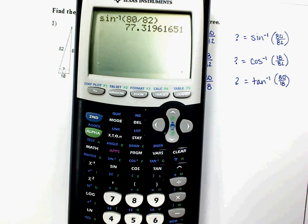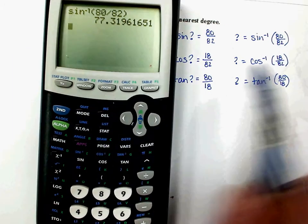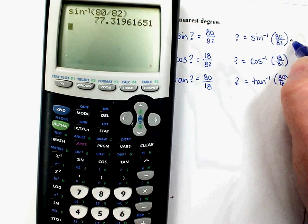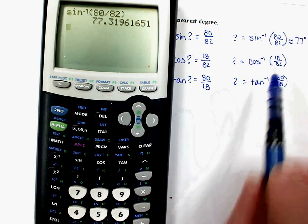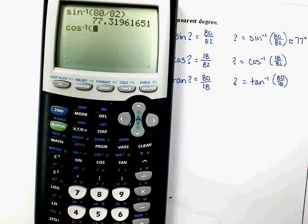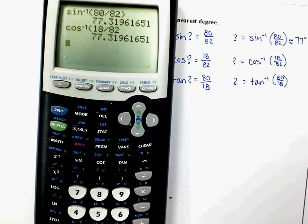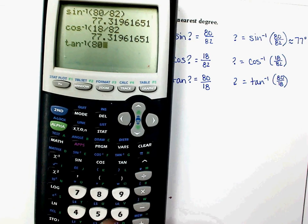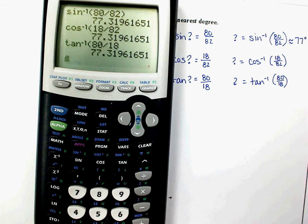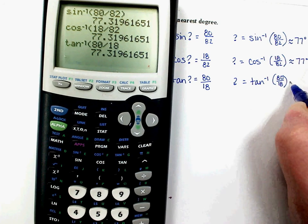So we're rounding it to the nearest degree in our directions there. So that would round to 77 degrees. It's the same answer we would get for the other two. If we did inverse cosine of 18 divided by 82, it would still be 77 degrees. And inverse tangent of 80 divided by 18 is also 77 degrees. So they all give you the same answer. It doesn't matter which one of those you use. So that's it.